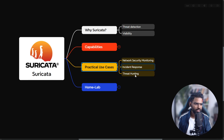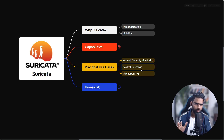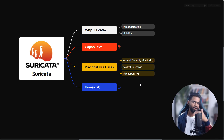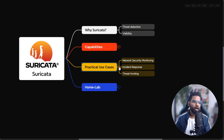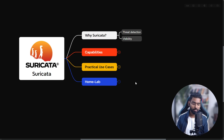Now regarding practical use cases — you can deploy Suricata for network security monitoring and incident response. In IPS mode, you can specify actions like dropping packets when certain conditions are met. It also helps you with threat hunting. So Suricata is an IPS and IDS network security monitoring tool.